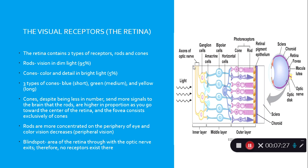There are three types of cones: blue receptors for short wavelengths, green for medium wavelengths, and yellow for long wavelengths. Despite being only 5%, cones still send more signals to the brain than rods, and they are more concentrated toward the center of the retina. The fovea consists exclusively of cones. Rods are more concentrated on the periphery of the eye, focused on movement and seeing in dim light.